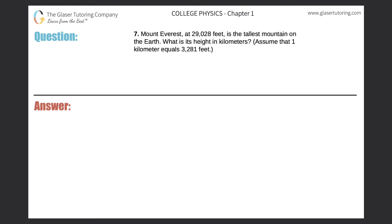Number seven. Mount Everest at 29,028 feet is the tallest mountain on Earth. What is its height in kilometers? Assume that one kilometer equals 3,281 feet.